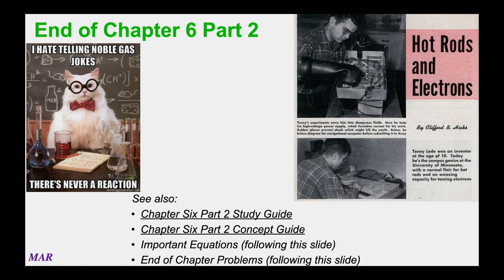That's the end of Chapter 6 Part 2. For more help, the study guide has a bulleted list of concepts from this section, and there's a concept guide with worked problems on electron configuration and related topics. The lecture notes include a slide of important equations and end-of-chapter problems with answers on the following slide. If you get stuck on anything, reach out via email or office hours — I'm happy to help. Good luck with your studying and have a wonderful day.